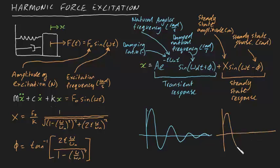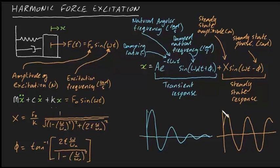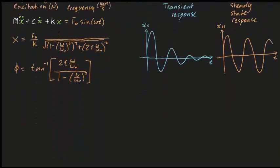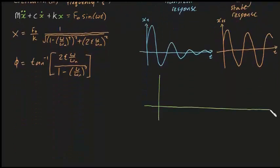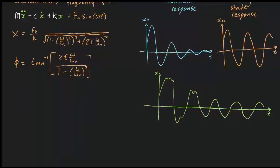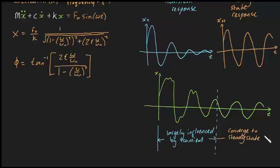The steady state response behaves differently though. The steady state amplitude, x, isn't a function of time, so its amplitude remains constant. This means that the final equation of motion, which is the sum of transient and steady state, will look something like this. You can see the total response will undergo sporadic behavior early on when the system is still largely influenced by the transient response, but this will eventually converge to the steady state response after some time.